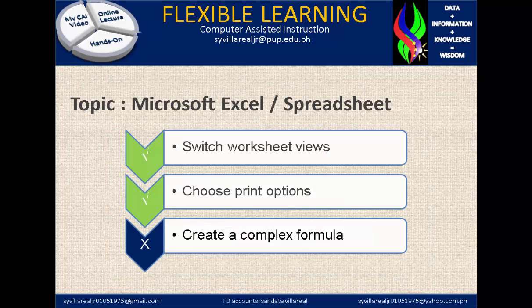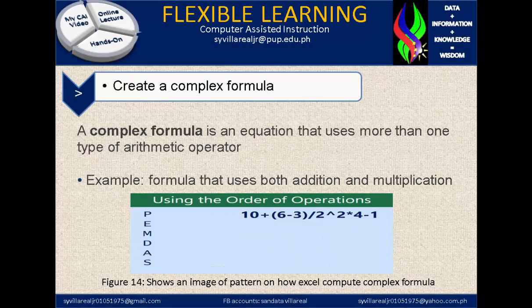We are finished with the Choose Print Options. Let's proceed to our last topic: Create a Complex Formula. A complex formula is an equation that uses more than one type of arithmetic operator — for example, a formula that uses both addition and multiplication. Figure 14 shows an image of a pattern on how Excel computes a complex formula using the order of operations, which is PEMDAS. For example: 10 plus (6 minus 3) divided by 2, to the exponent of 2, multiplied by 4 minus 1.